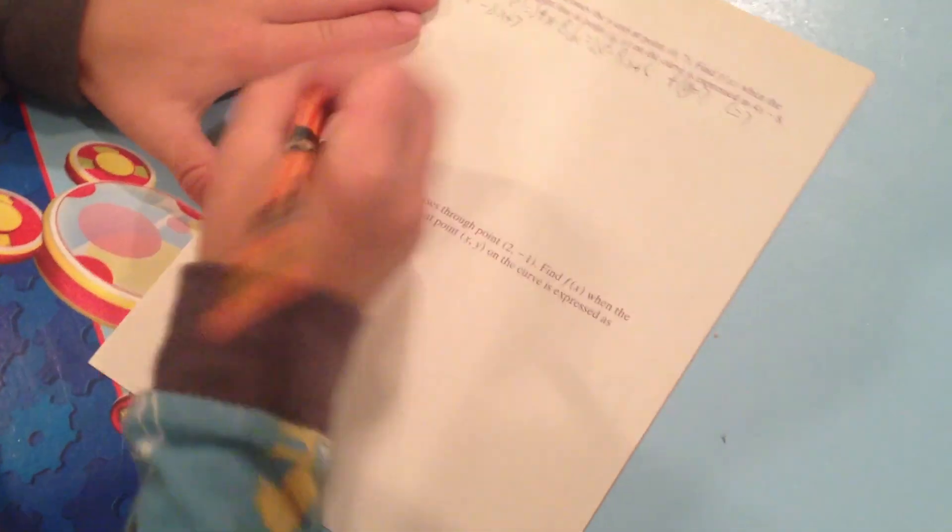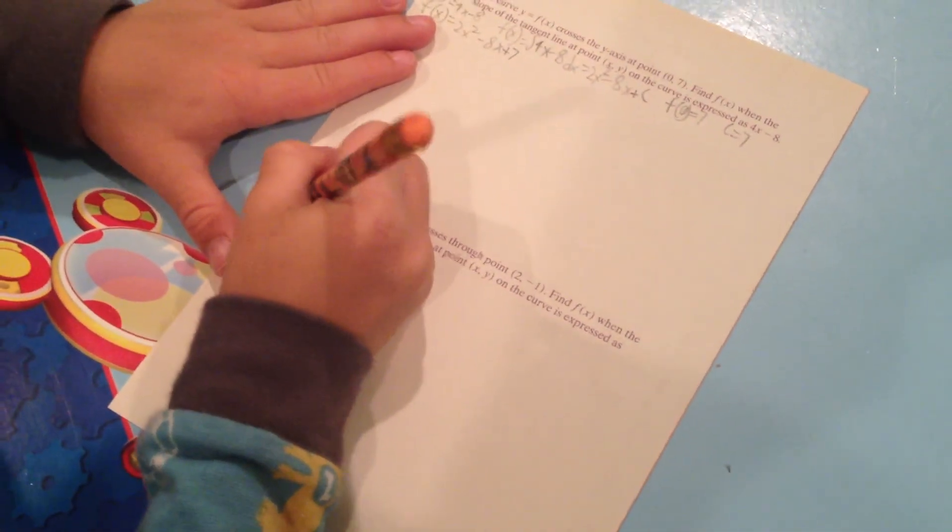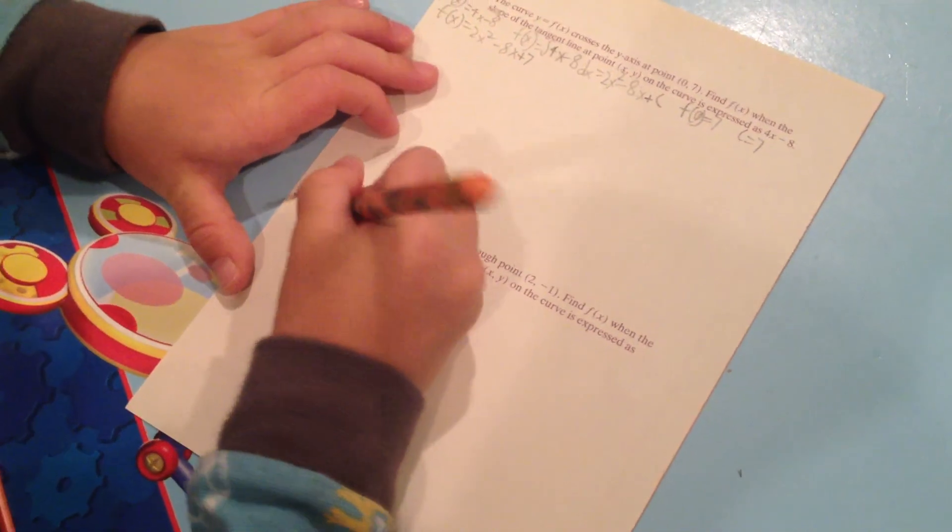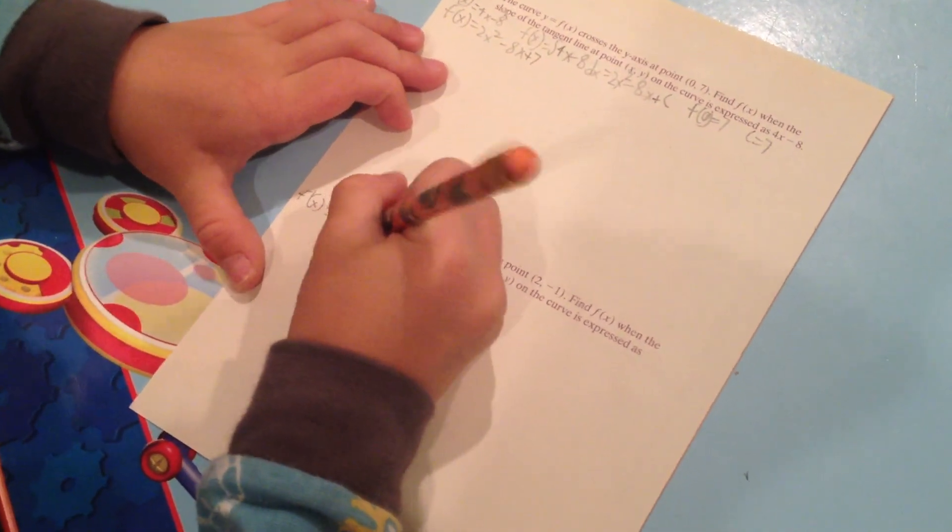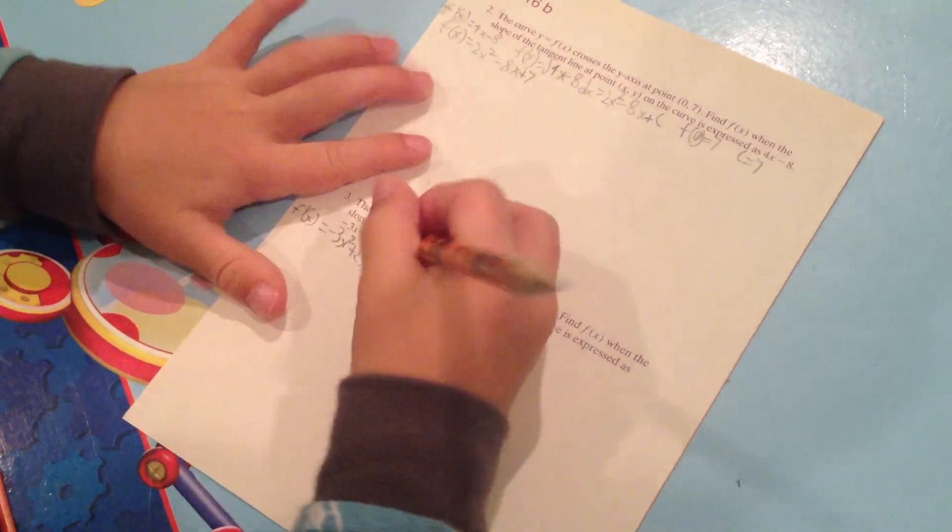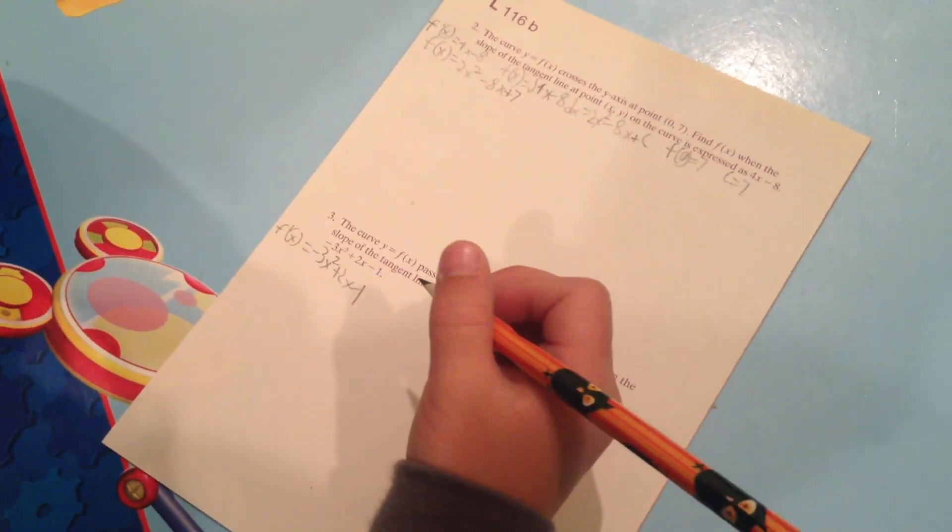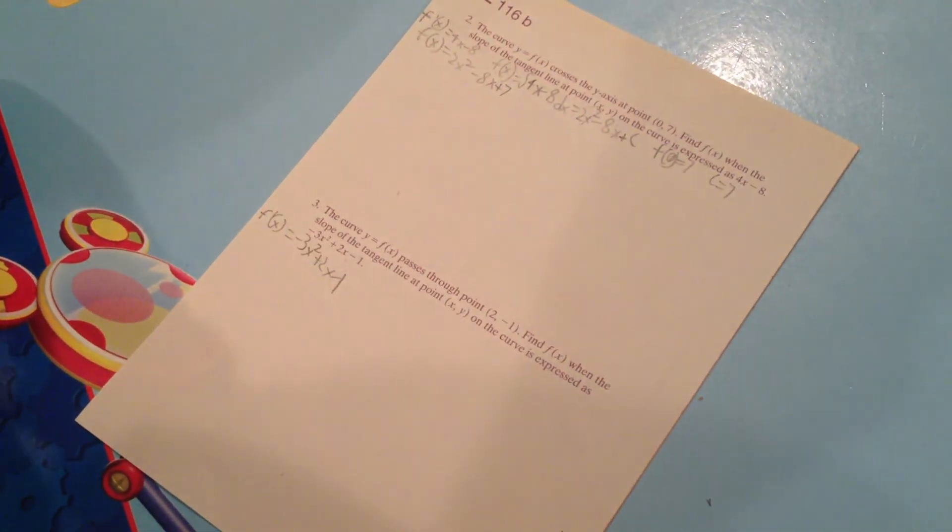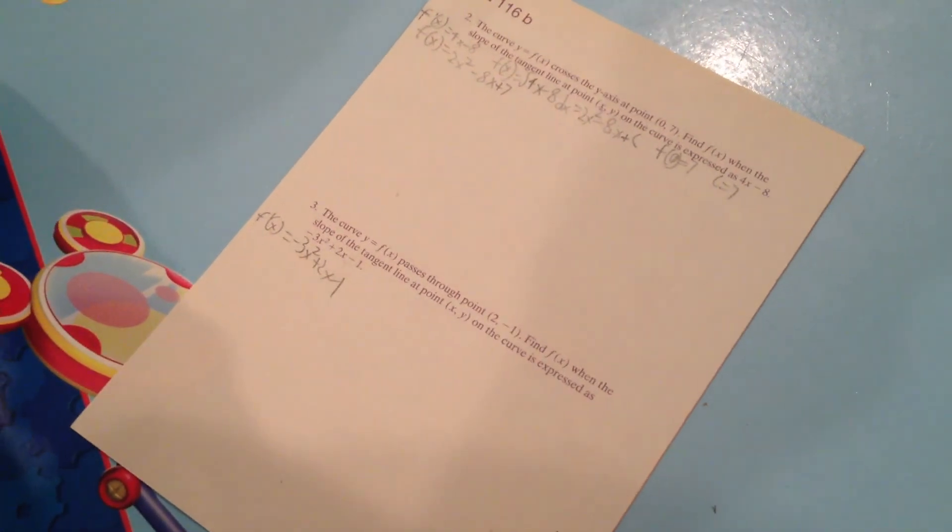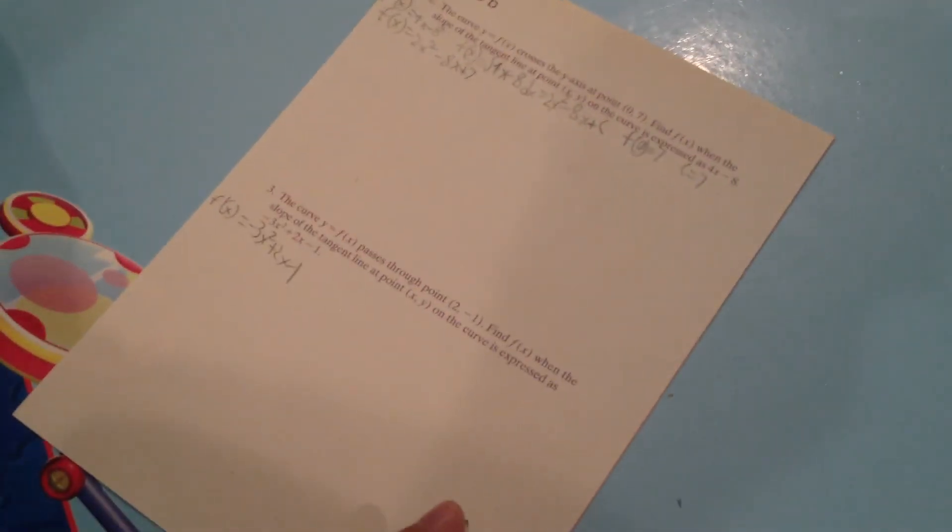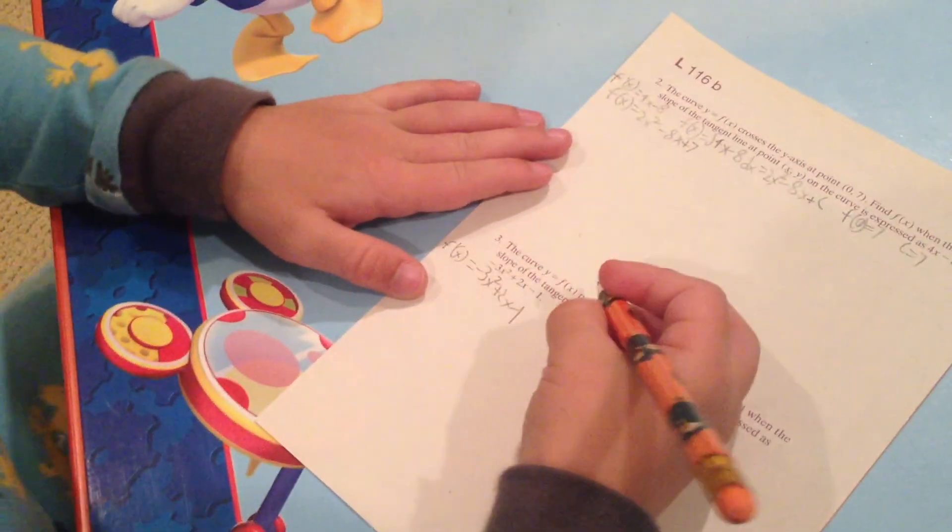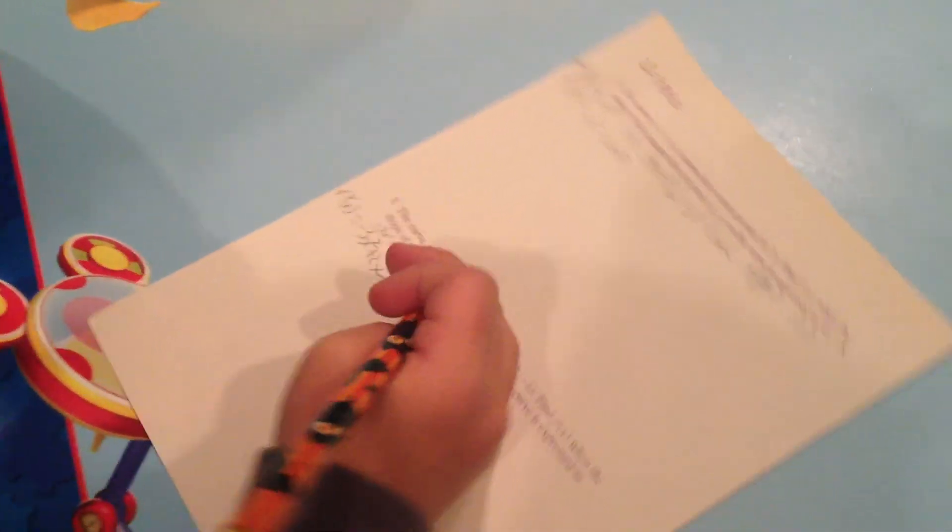Okay, well, let's go to the bottom. First thing, f prime of x equals, just copy this. Negative three x squared plus two x minus one. Why is it that? Well, that's the same thing as this. Yeah, you're right. I was just asking you.